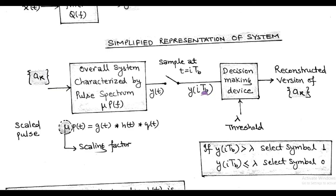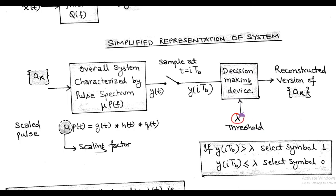In order to recover the original modulating signal a_k — that is, the reconstructed version of a_k — a decision making device is used. This decision making device has a threshold value λ.